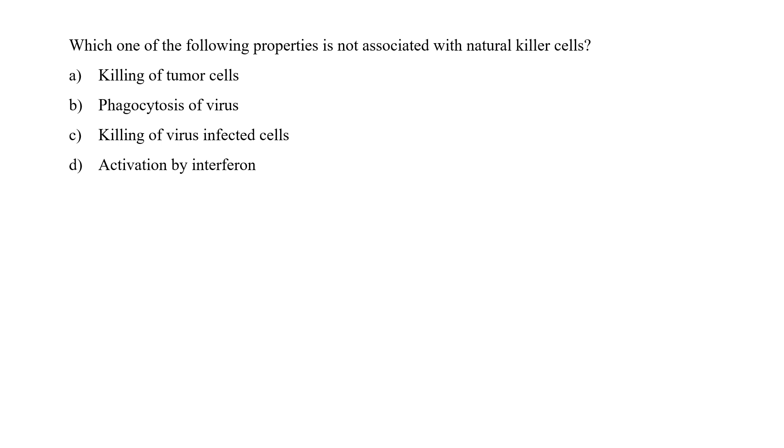Which one of the following properties is not associated with natural killer cells? Killing of tumor cells, phagocytosis of viruses, killing of virus-infected cells, or activation by interferons. As you know, NK cells, they are the alternative fallback option of cytotoxic T cells. So anything which cannot be killed by cytotoxic T cells because they are not being presented to cytotoxic T cells, then NK cells come into the picture. NK cell action is very similar to cytotoxic T cells and both cells are basically killers. That means they release certain chemicals which actually help in providing defense. They are not phagocytosis in nature. That means they are not phagocytes. Macrophages on the other hand are phagocytes. So option B is the correct answer—NK cells can never be phagocytosis of viruses.